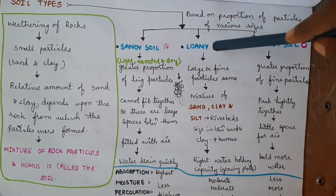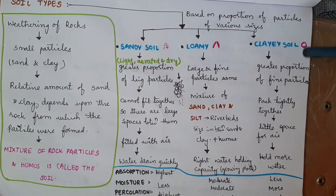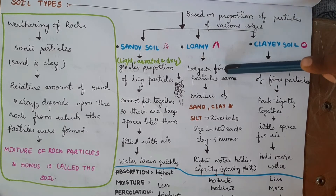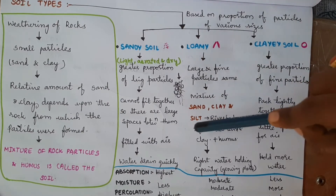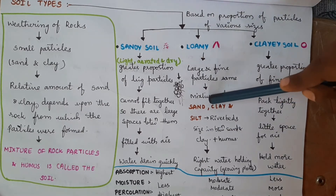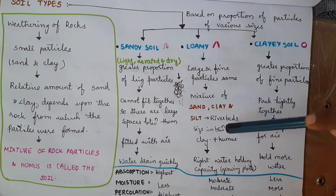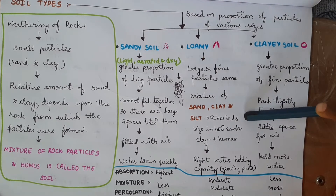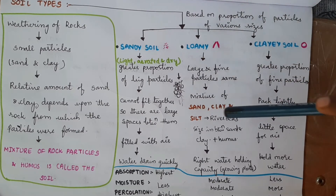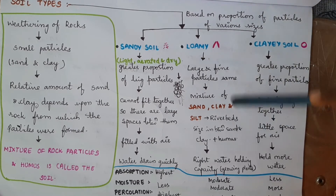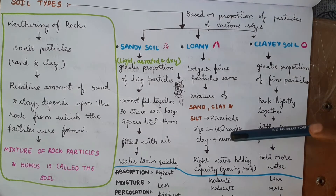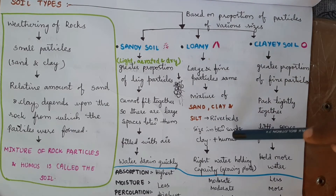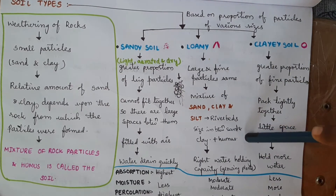Next, let's look at loamy soil. Loamy soil is a mixture of sandy soil and clay soil — it has both big particles and small particles. It is a mixture of sand, clay, and silt. Silt particles are found in river beds. Along with sand, clay, and silt particles, loamy soil also contains humus. Humus is a mixture of rotted dead matter in the soil.